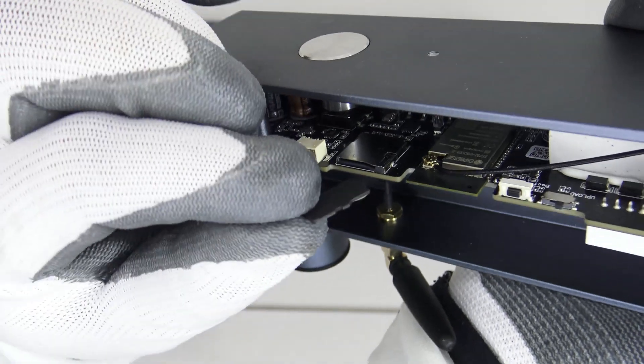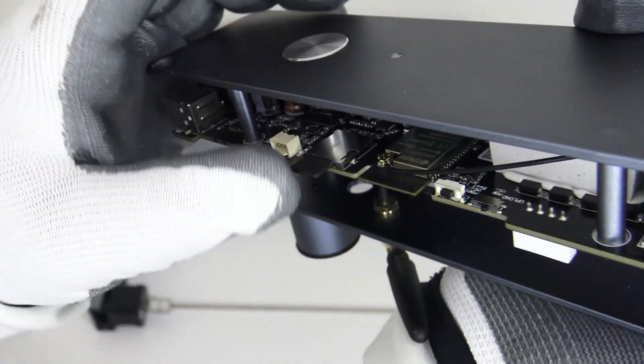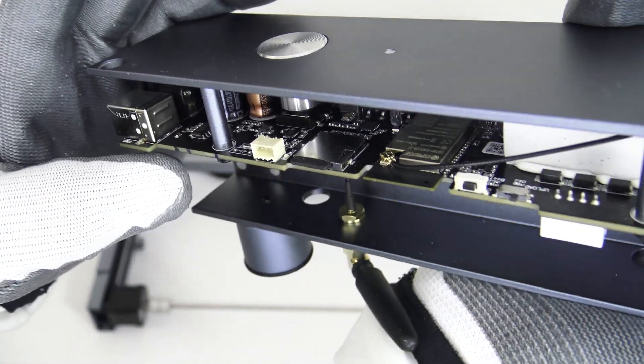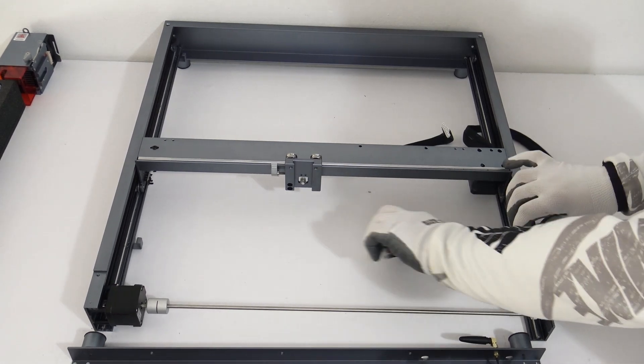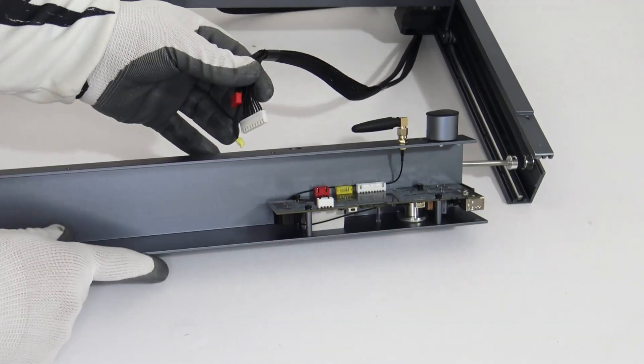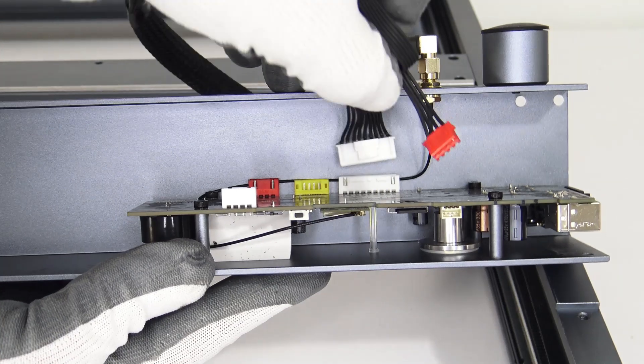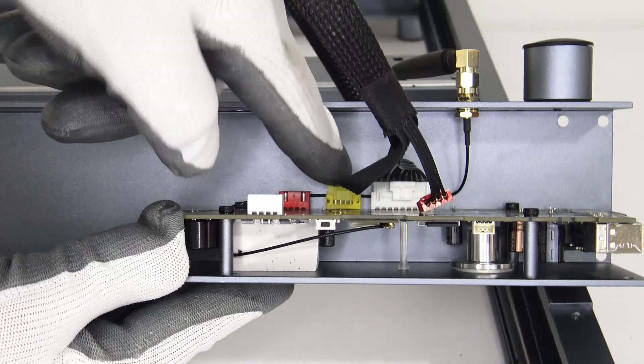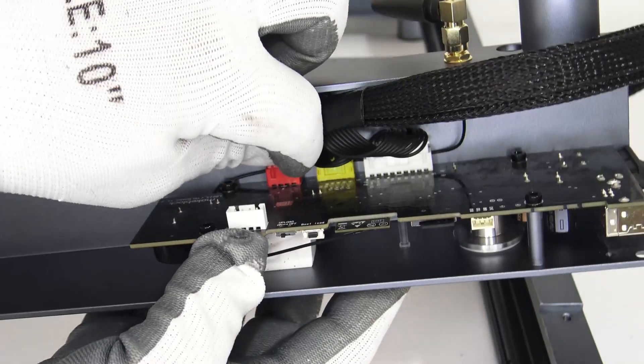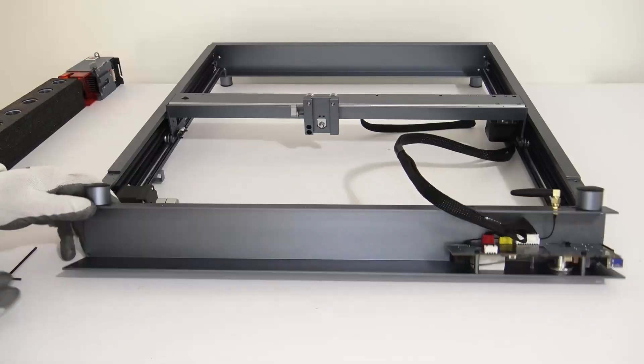This board has Trinamic stepper motor drivers which drive the motors with a pure sine wave. This way the motors are very precise and silent, there are no jagged edges when engraving diagonal lines. Can achieve a lightning speed of 400 millimeters per minute or over 20,000 millimeters per minute.